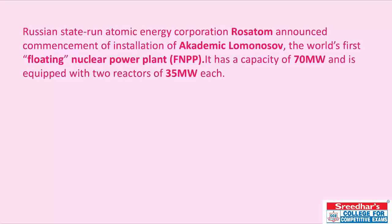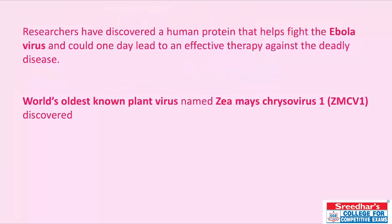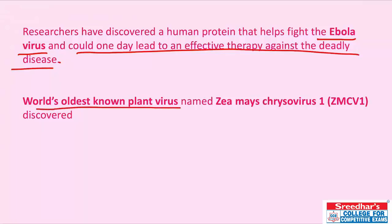Rosatom, Russia's state-run atomic energy corporation, announced the commissioning of Akademik Lomonosov — the world's first floating nuclear power plant with a capacity of 70 megawatts, equipped with two reactors of 35 megawatts each. Researchers have discovered a human protein that helps fight the Ebola virus and could lead to an effective therapy. The world's oldest known plant virus, Zea mays chrysovirus 1, was discovered.